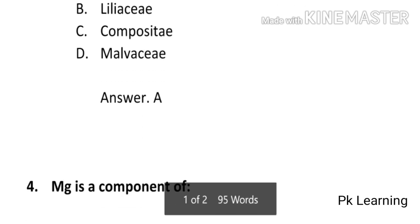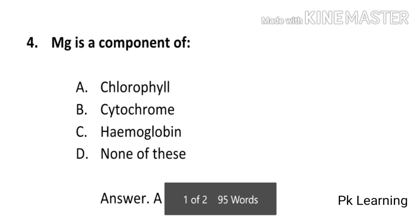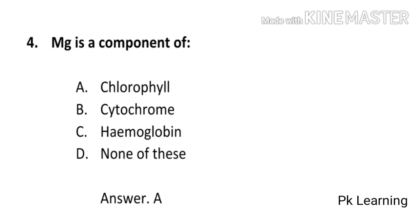Next question: Mg is a component of — (a) Chlorophyll, (b) Cytochrome, (c) Hemoglobin, (d) None of these. The answer is (a) Chlorophyll. Magnesium (Mg) is a component of chlorophyll.